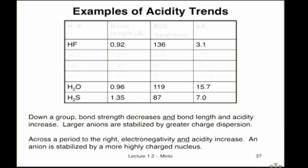This period trend from HF to H2O continues across that row. If I ask you what's a stronger acid — ammonia, NH3, or water, H2O — you want to think about what the proton is attached to. Nitrogen in one case, oxygen in the other; they're in the same period. Which is more electronegative, nitrogen or oxygen? Oxygen is, so H2O will be the stronger acid.